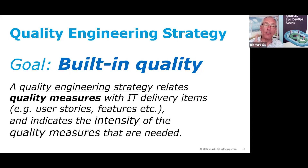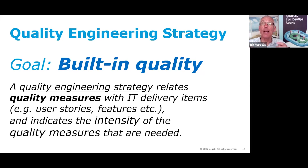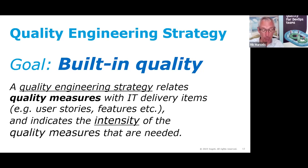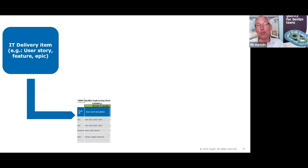Let me give you a quick overview of the quality engineering strategy before we dive into the template, which you'll download yourself. The strategy starts with IT delivery items such as user stories and features. For every IT delivery item, you determine the relevant quality attributes — quality characteristics like security, usability, performance, and so on.